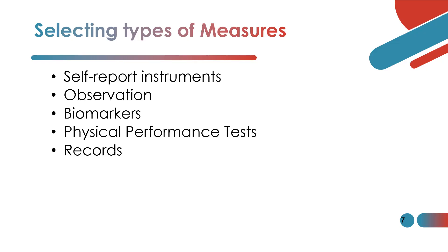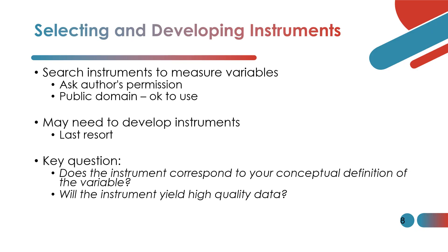The second step is selecting types of measures. Once you have identified your variables, you need to think about how to operationalize and measure them. What instruments will you use? Would you need a self-report instrument, an observation, biomarkers, a physical performance test, or maybe some records? We will talk about these later in this discussion.